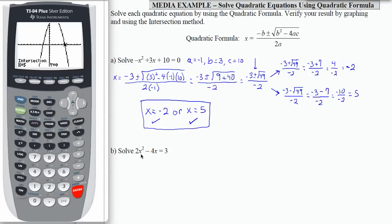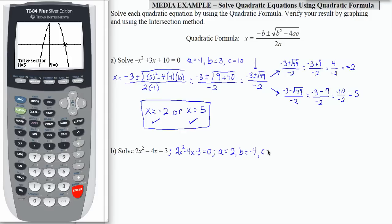We're going to use the same kind of process with part b. The first thing we need to do, however, is to make sure our quadratic is in standard form — we want to subtract 3 from both sides and set our equation equal to 0. Once we do that, we can identify the coefficients: a is the coefficient of x squared, so that's 2; b is the coefficient of x, so that's negative 4; and c is the constant term, so that's negative 3.